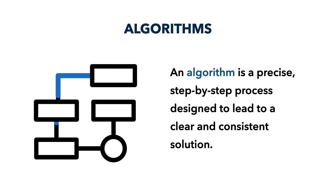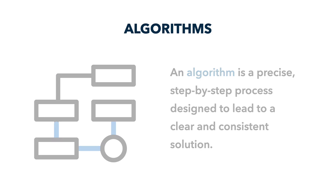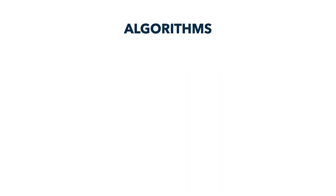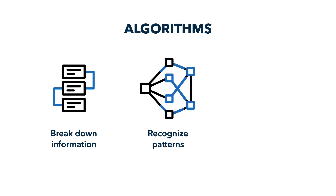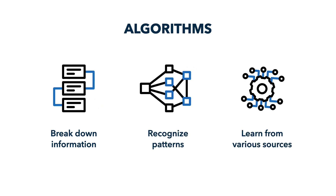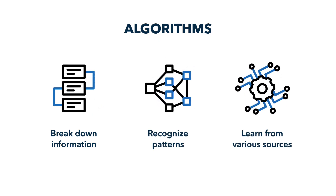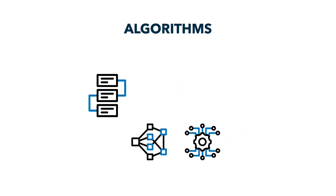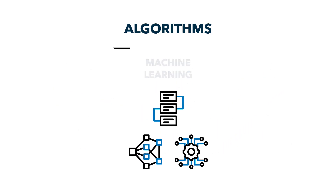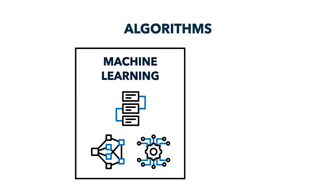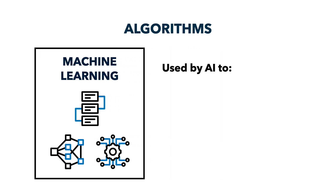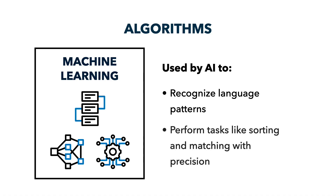Algorithms are used by various digital systems, including AI, to help break down information, recognize patterns, and ultimately learn from various data sources. The sum of these processes is known as machine learning. AI systems rely on machine learning algorithms in order to recognize language and perform tasks like sorting and matching with precision.